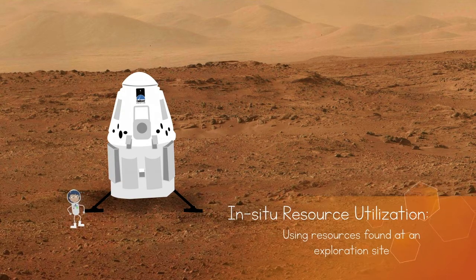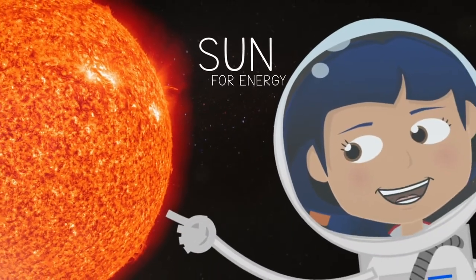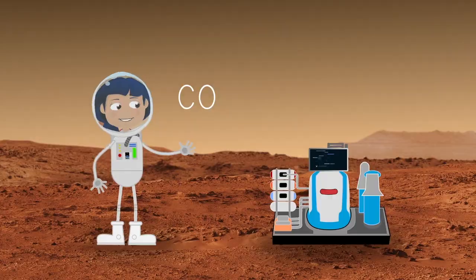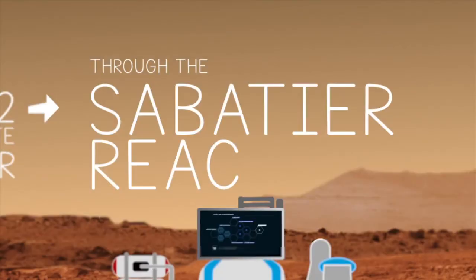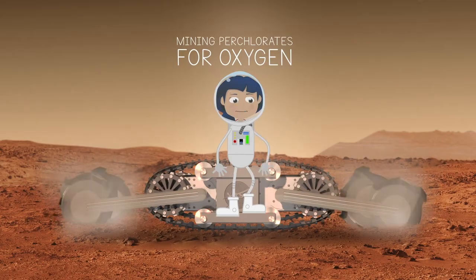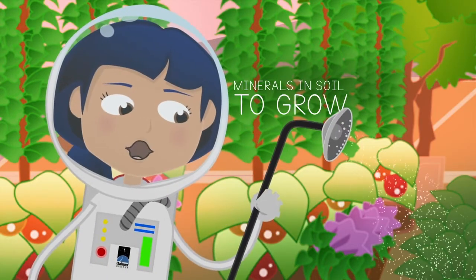This is called in-situ resource utilization. This includes using the Sun for energy, using the carbon dioxide to create water through the Sabatier reaction, mining the perchlorates for oxygen, and using minerals in the soil to grow food.